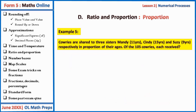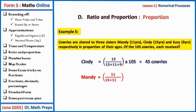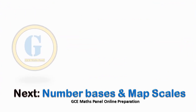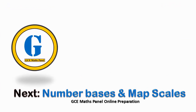Example five: 105 cows are shared to three sisters — Mandy, Cindy, and Suzie — in proportion to their ages. Cindy receives her age over the total sum of ages times 105, giving 45 cows. Mandy receives 11 over the sum of ages times 105, giving 33 cows. Suzie receives 9 over the sum of ages times 105, giving 27 cows. Our next sub-lesson will be on number bases and map skills. Don't forget to take the quiz, subscribe, and share with your friends.